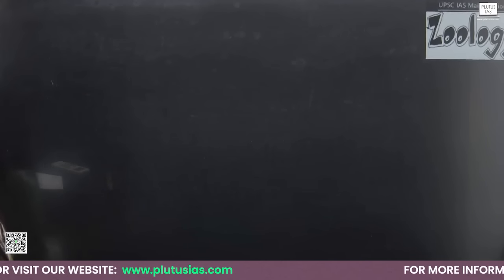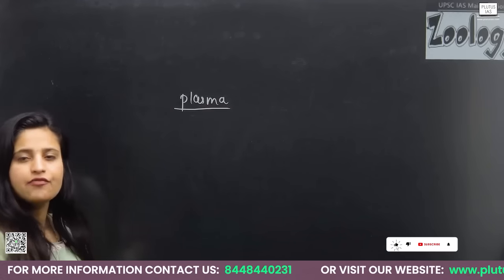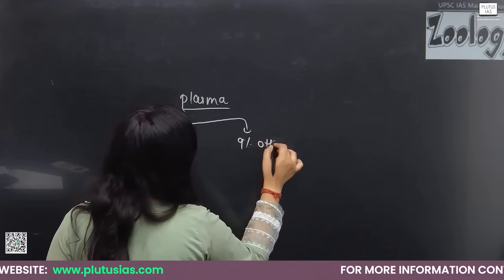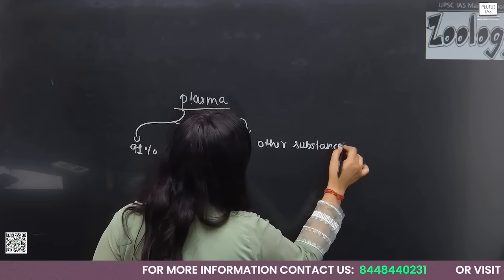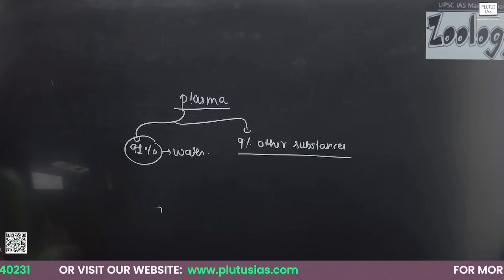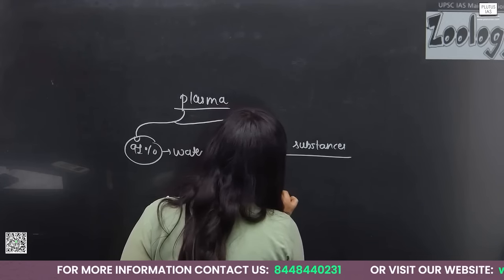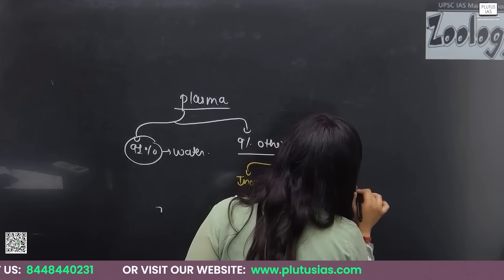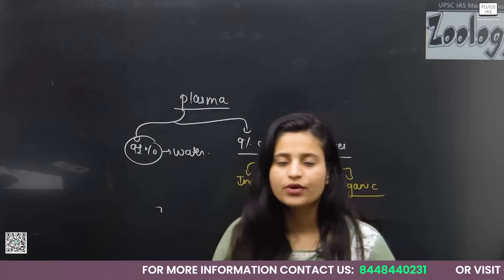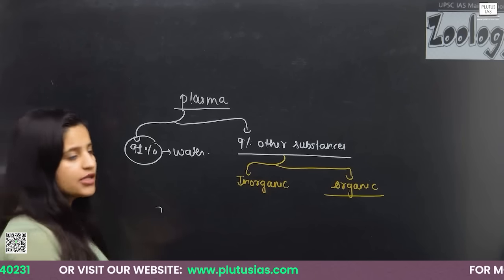Plasma contains 91% water. The remaining 9% consists of other substances. In that 9%, we have inorganic substances — like bicarbonate ions, ferric ions, ferrous ions, sodium, potassium — and organic substances, including plasma proteins and other materials.